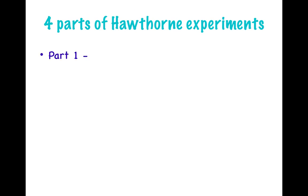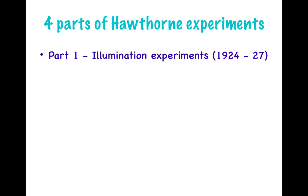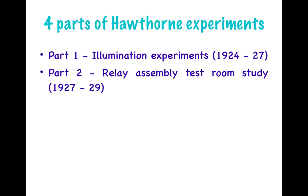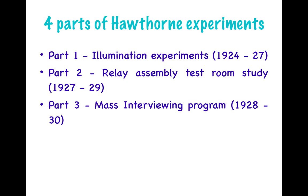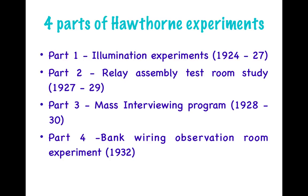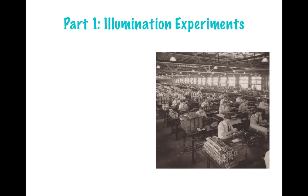The four parts of the Hawthorne experiments were: first, the illumination experiment, conducted over three years from 1924 to 1927; second, the relay assembly test room study, conducted from 1927 to 1929; third, the mass interviewing program, conducted between 1928 and 1930; and fourth, the bank wiring observation room experiment, conducted in 1932.